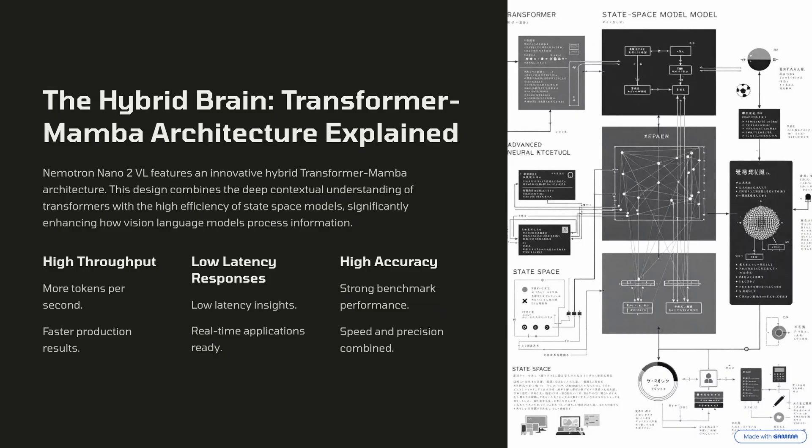I covered this on a previous video, but just to touch on it again — because it can sound a little like gibberish — what's really great with transformers is they have a great understanding of context, but they're slow with long sequences. Part of the problem with that is especially as you start to add in tokens that include video,